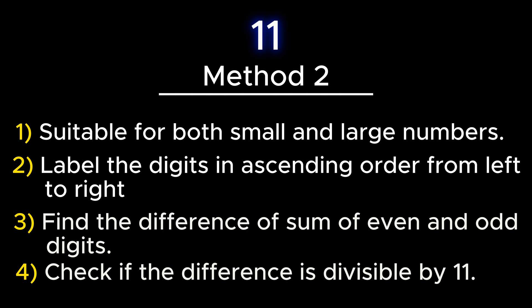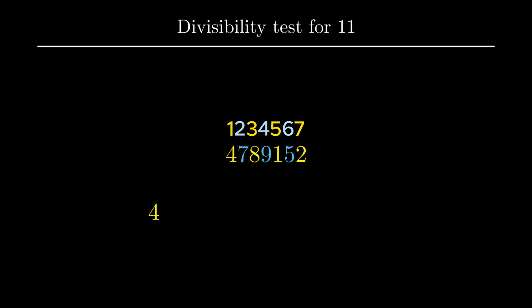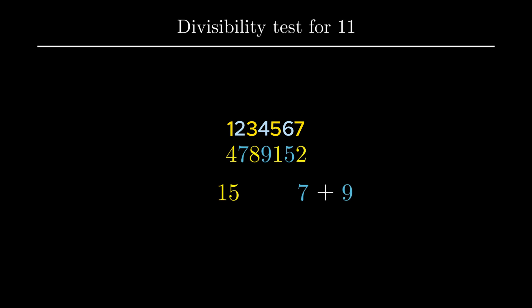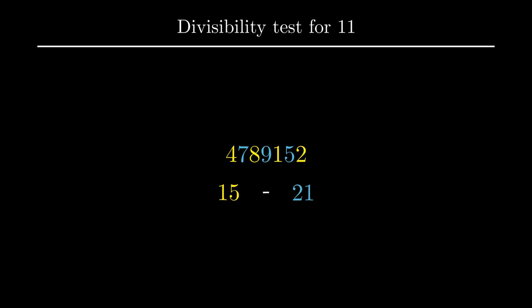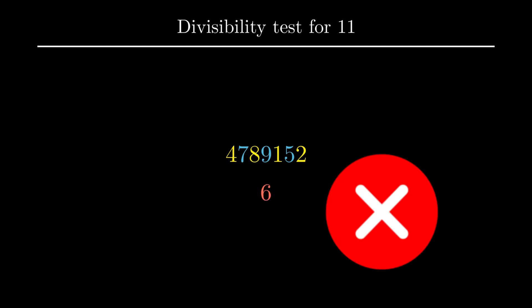Consider the number 47,89,152. The sum of digits at odd places is 4 + 8 + 1 + 2, which equals 15. The sum of digits at even places is 7 + 9 + 5, which equals 21. The difference of these sums is 21 minus 15, which equals 6. Since 6 is not divisible by 11, the given number is not divisible by 11.